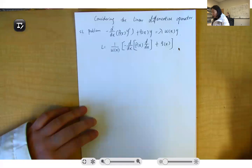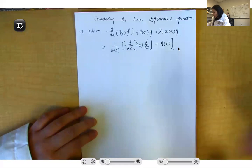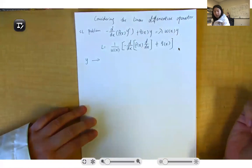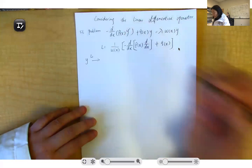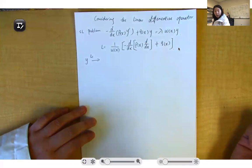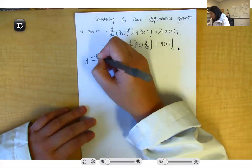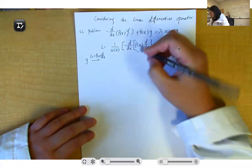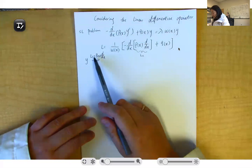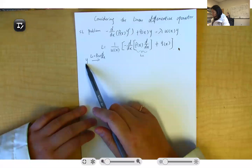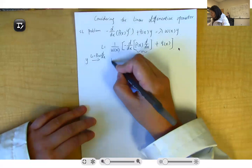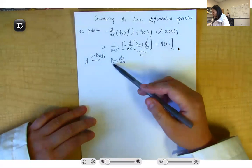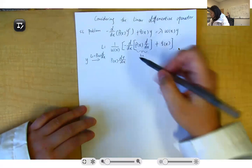We can operate this on y to write the Sturm-Liouville problem as an eigenvalue-eigenvector problem. We first define an inner operator L1, where L1 equals p(x) d/dx — that is the inner part. After we operate L1 on our variable y, we get p(x) dy/dx, which is p(x)y'.